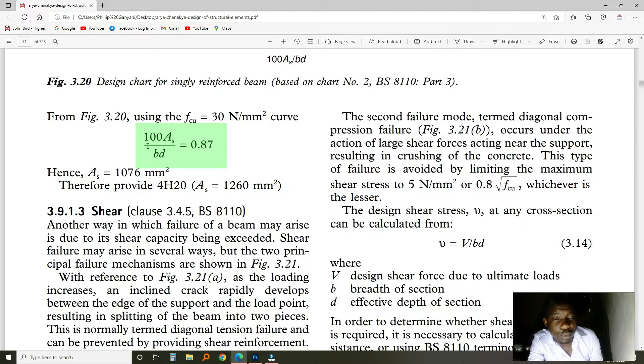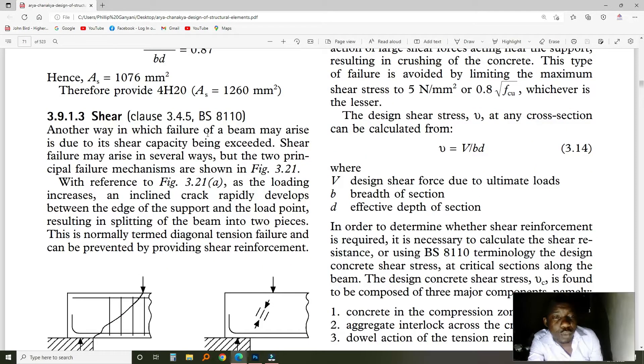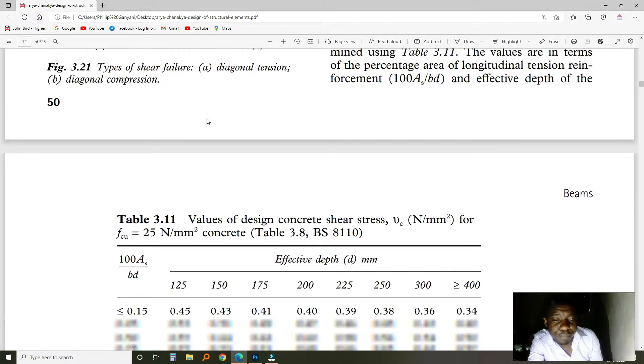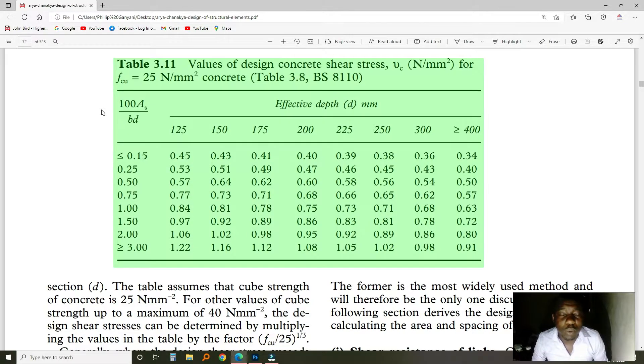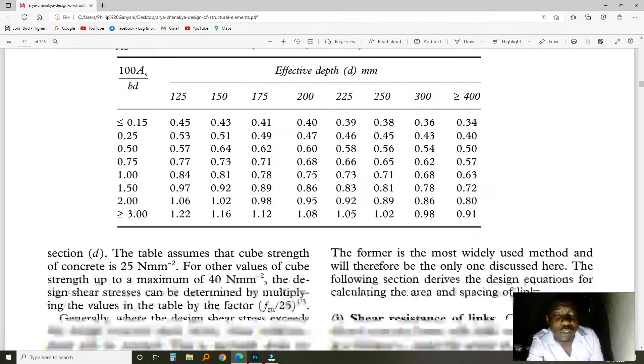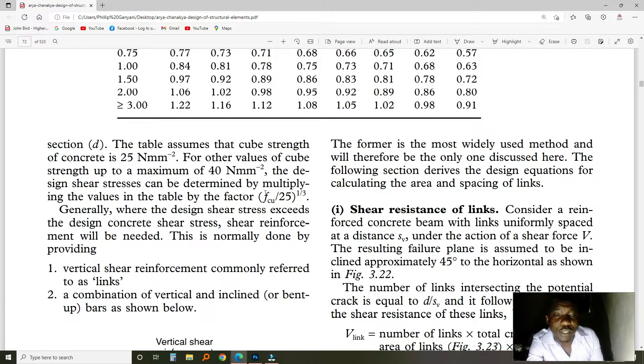So in our case, if you substitute the numbers, you are going to come up with this value here. So when you come up with such a value, you need to use this table. In the BS, it is table 3.11. So this is useful for concrete grade 25. Now, there is a way that you use to convert, as you can see here.